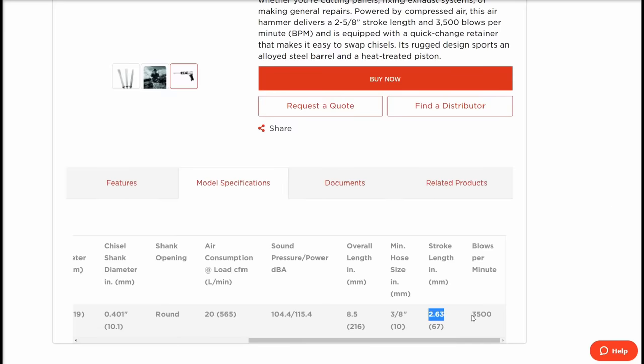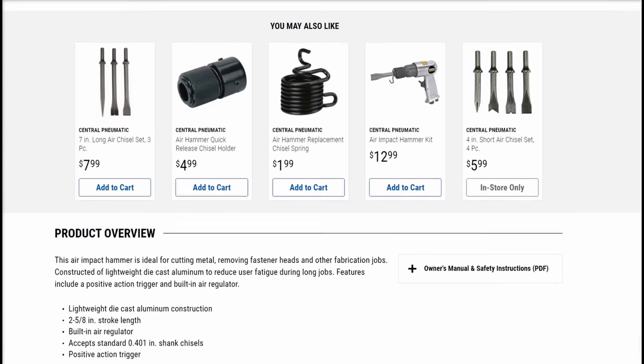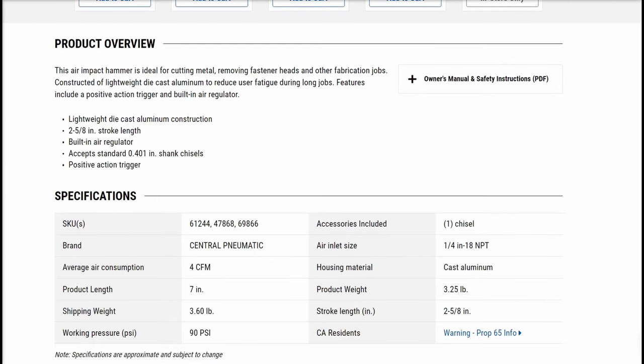As for model numbers on the Harbor Freight, that's going to be a bit of a game of spin the bottle. The old Central Pneumatic comes in three different model number flavors, meaning there are up to three different factories or suppliers providing this to your local store.